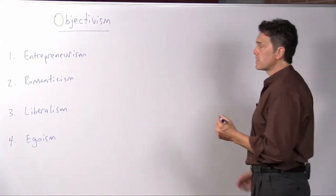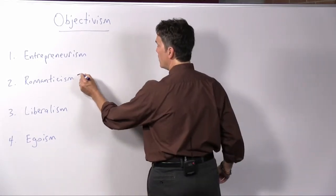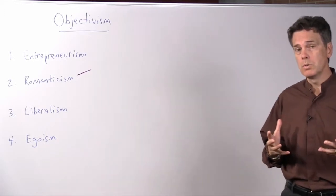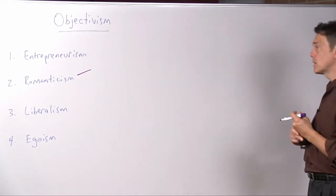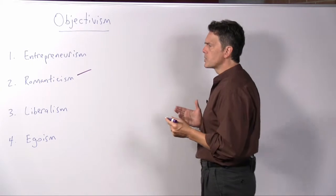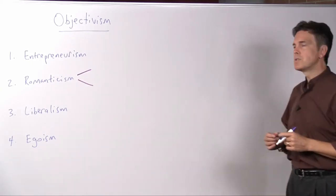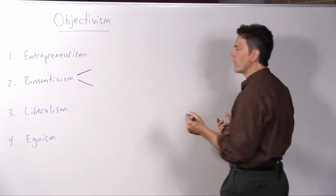First in Romanticism, Rand of course was first a novelist, and in terms of aesthetic theory, her approach to literature is the romantic approach. But Romanticism also has a philosophical content to it, and there are two themes in Rand's approach that are important here.